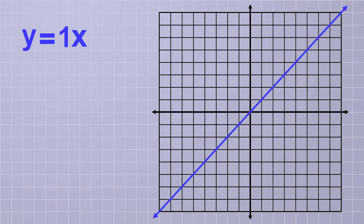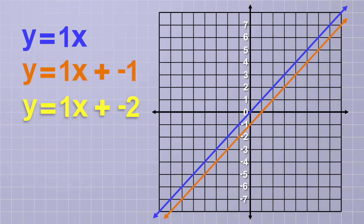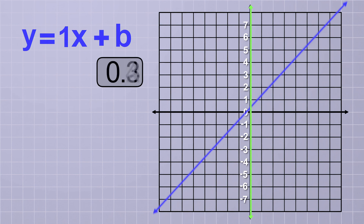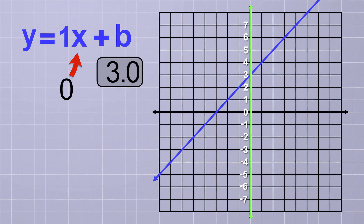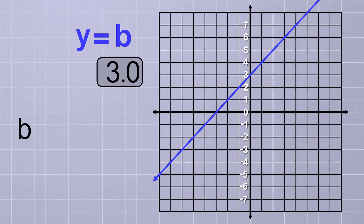But what goes up must come down. To shift the reference line down, we use negative numbers for b. Remember, adding a negative is the same as subtracting. If we choose b equals negative 1, we get y equals 1x minus 1, which shifts the line down so it crosses the y-axis at negative 1. And b equals negative 2 shifts it down to cross at negative 2. So the variable b determines exactly where the line will intercept the y-axis. When x equals 0, which happens only at the y-axis, the mx term is 0, leaving only b. So b is called the y-intercept.